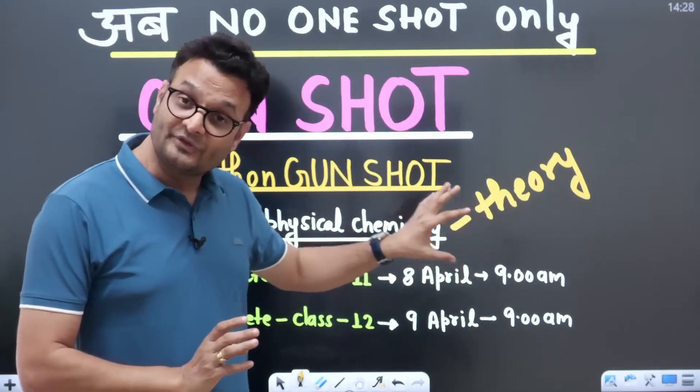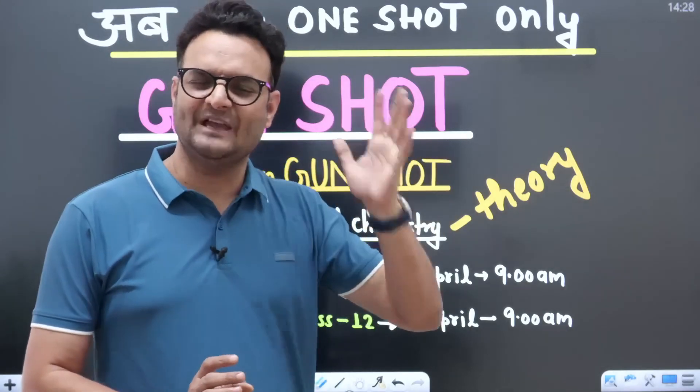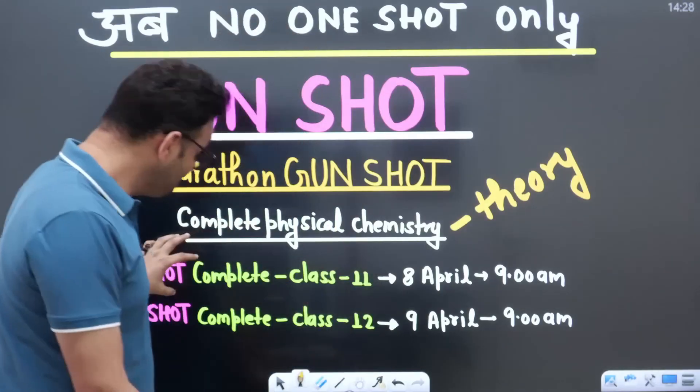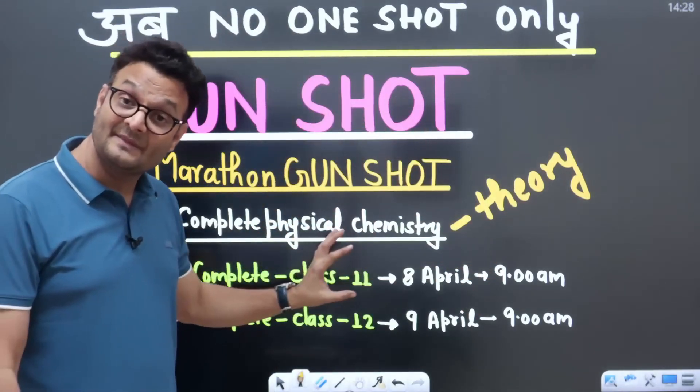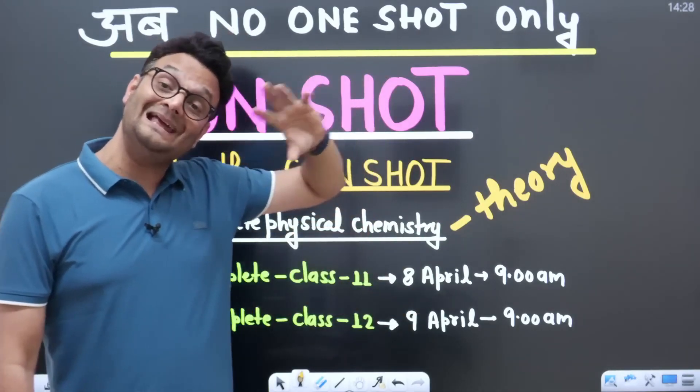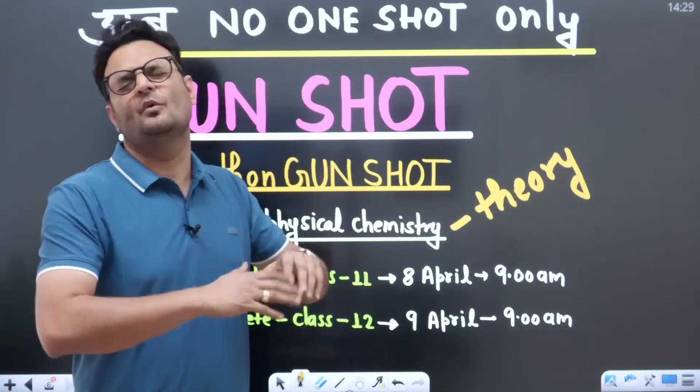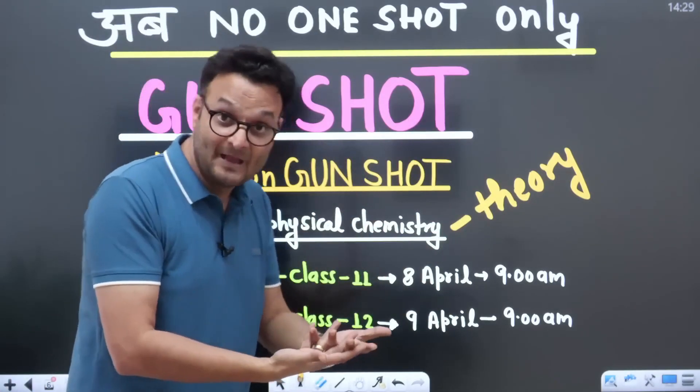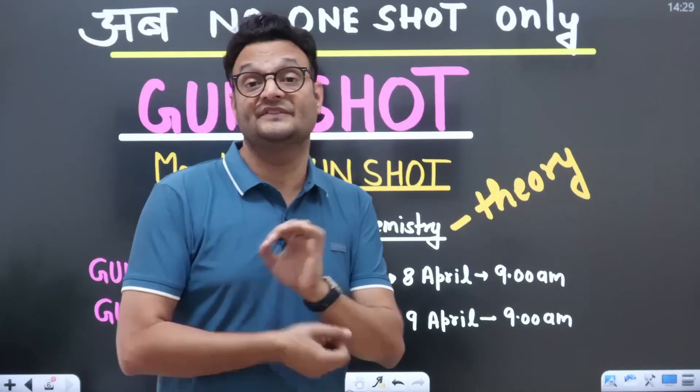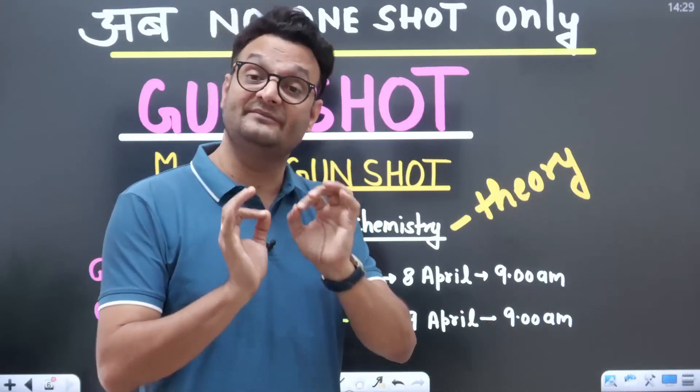In two days, I have a session of complete 11th gunshot on the 8th of April at 9am. I have a session of complete 12th on the 9th of April at 9am. Two in one shot. So keep in mind that now your gunshot will work like a bullet, meaning two chapters, four chapters, five chapters will be revised together. I will get it done on this channel, on Sankalp Neet Vedantu official channel. You can go and see the session. Turn on the notification.